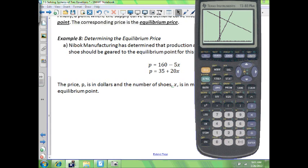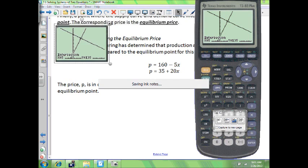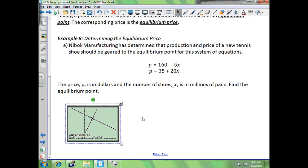Okay. Where those two lines intersect is going to be your equilibrium point. So second trace, let's find our intersection. So your intersection is at 5, 135.